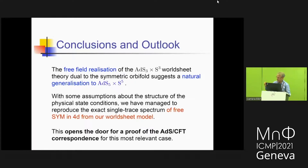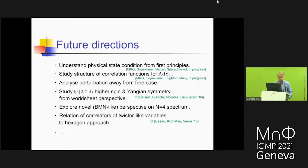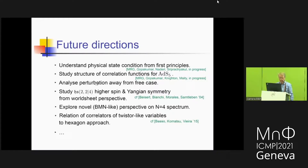The free-field realization proven for ADS3 cross S3 suggests a natural generalization to ADS5 cross S5, and with some assumptions about the physical state condition, we reproduce exactly the spectrum of N=4 super-Yang-Mills in 4 dimensions from our world sheet model. That opens the door towards possibly proving ADS-CFT in this context. There are many open questions: we need to understand the physical state condition from first principles, we would like to understand correlation functions for ADS5 — the structure is so similar they will probably also be delta-function localized — and we are trying to analyze perturbation theory away from the free point, where we would like to see the integrable spin chain emerge from this world sheet description.